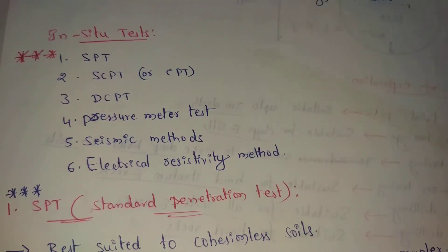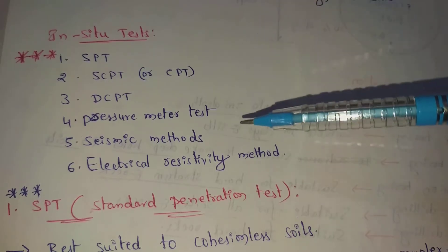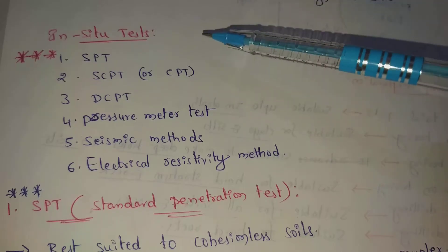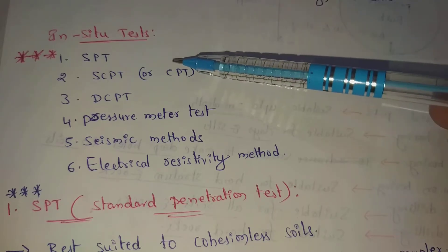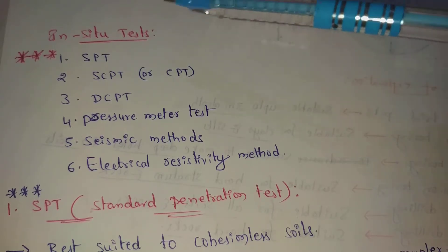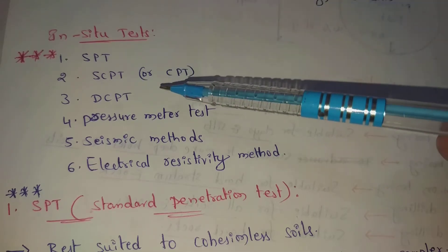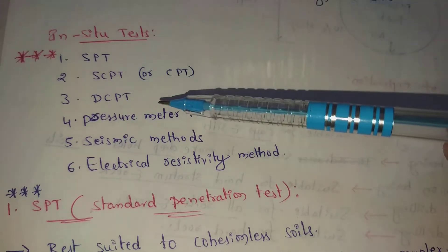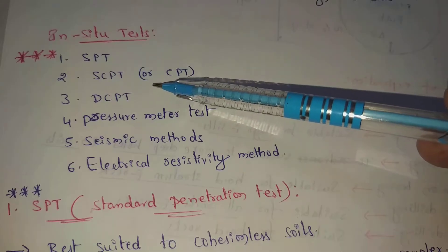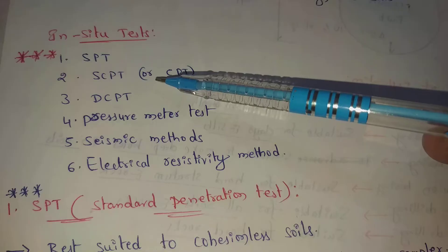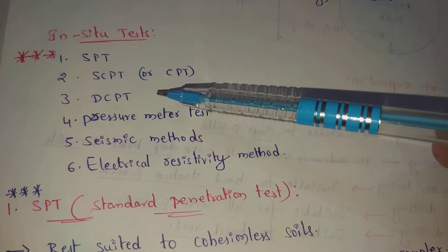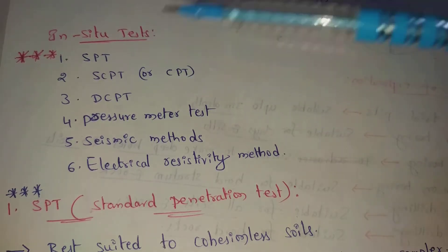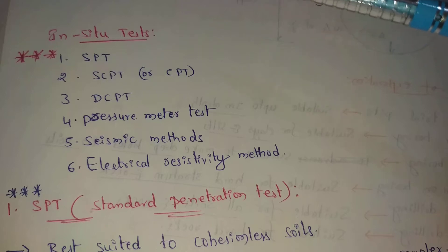Next topic: Institute Tests. I am going to cover 6 major in-situ tests. The first one is SPT, which means Standard Penetration Test. Other methods are SCPT and DCPT — SCPT means Static Cone Penetration Test, and DCPT means Dynamic Cone Penetration Test. This is one major difference between static and dynamic cone penetration tests.